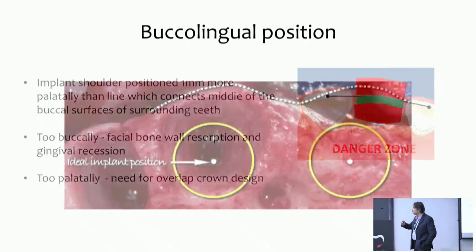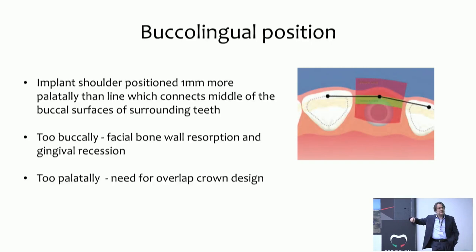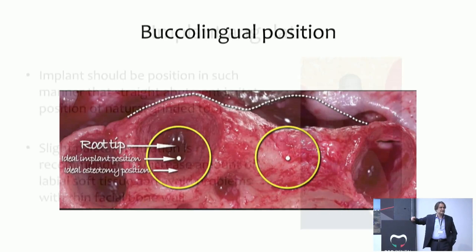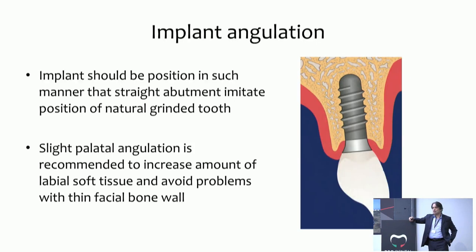Regarding the buccal-lingual position, the implant should be placed 1 mm palatally from the line connecting the adjacent teeth. Comparing the position of the root tip to the ideal osteotomy position shows clearly where the implant should be placed. The implant angulation should be positioned such that a straight abutment imitates the position of the natural adjacent teeth.